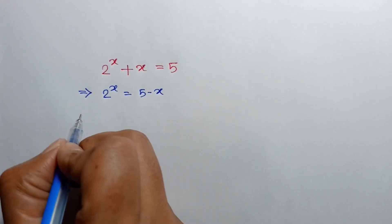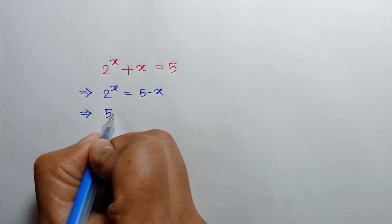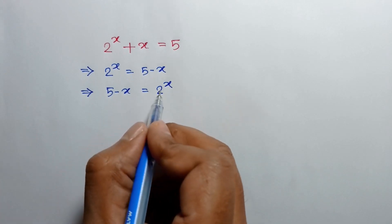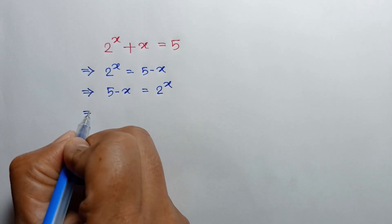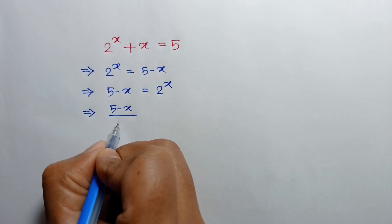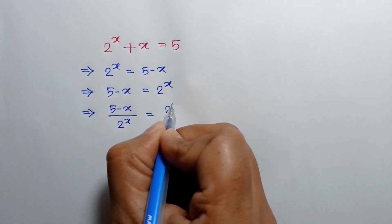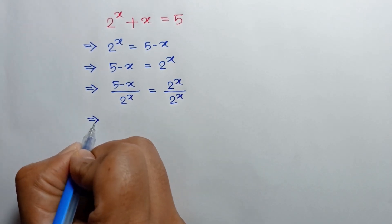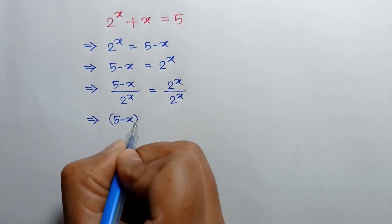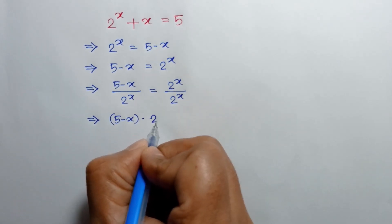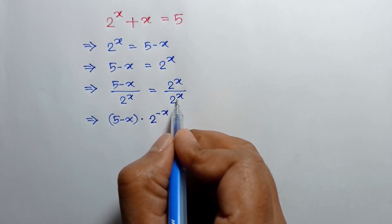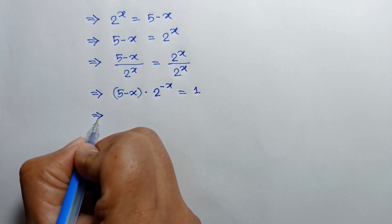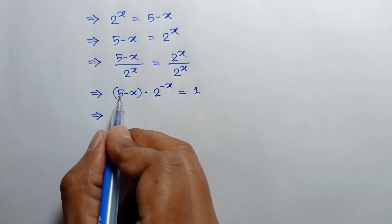Exchanging sides, we will have 5 minus x is equal to 2 to the power x. Now, dividing both sides by 2 to the power x, we can write (5 minus x) over 2 to the power x is equal to 1. Or, (5 minus x) times 2 to the power negative x is equal to 1, since the 2 to the power x terms cancel out. So the power of 2 is negative x and the coefficient is 5 minus x.